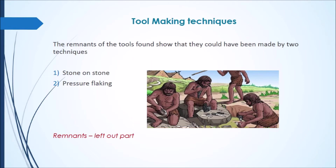The remnants of the tools found show that they could have been made by two techniques. Remnants means the leftover part — so the leftover parts of the tools which have been found are said to be made by two techniques. They are the stone-on-stone technique and the pressure flaking technique.